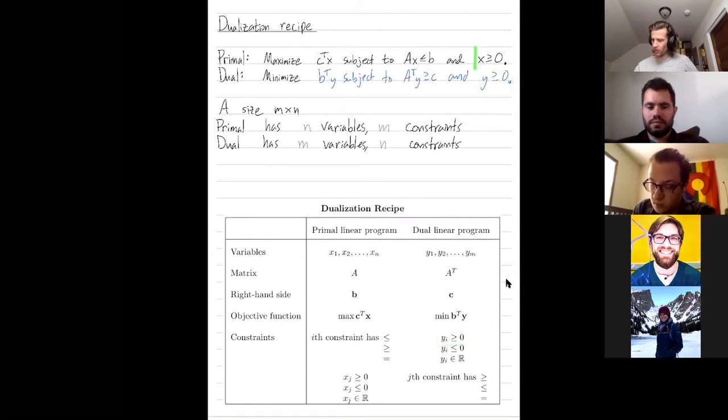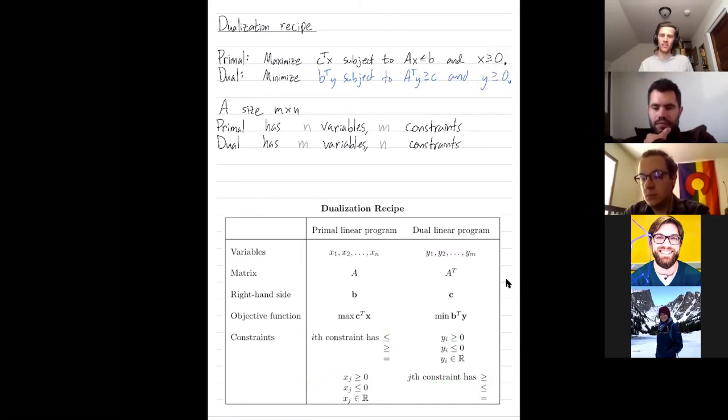And in the primal problem, all of our variables were bounded to be non-negative, and that's why in the dual problem, all of these bounds are the same direction. So you'll notice that when you go from constraints to variables, you swap the direction, but when you go from variables to constraints, you preserve the direction of the inequalities.